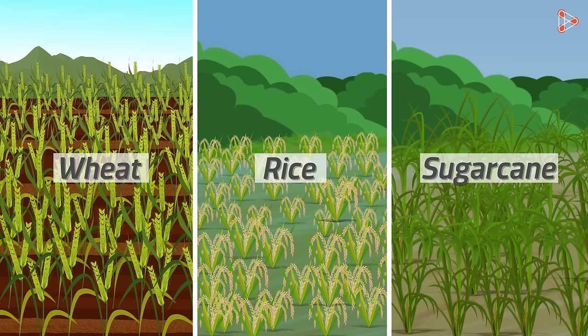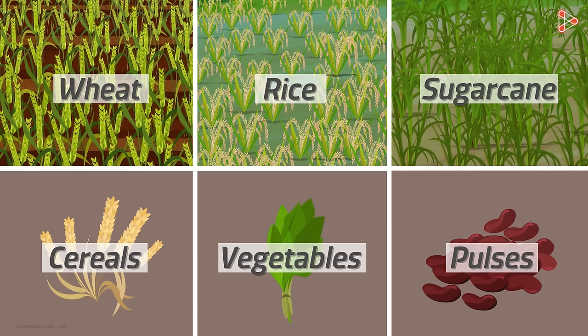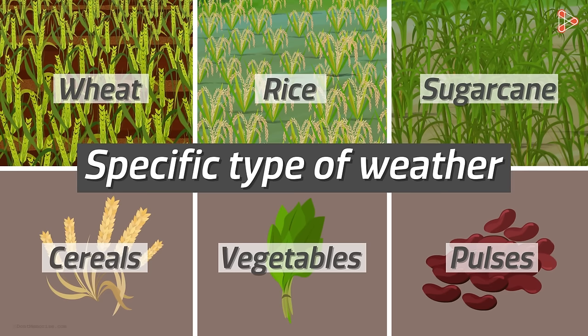Crops of wheat, rice or sugar cane can be grown at a time on a piece of land. Crops can be of cereals, vegetables or pulses but each crop needs a specific type of weather.